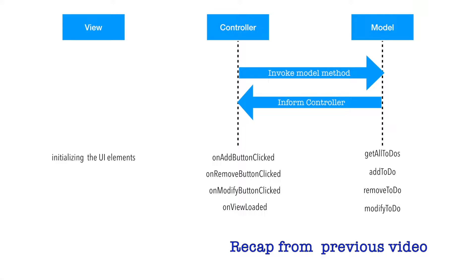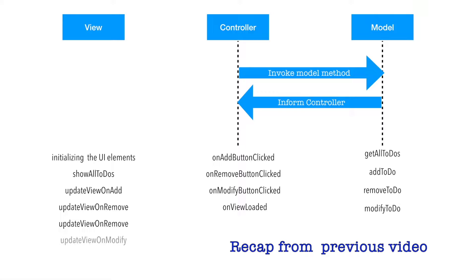One is to initialize the UI elements. It needs to show all the to-dos when the application launches for the first time, and then it needs to update the View on addition of a new to-do. In the same way, whenever we do remove or modify, we need to update the UI, and if there are any errors we need to show the appropriate errors on the screen and bind the data to the different UI elements.